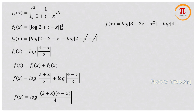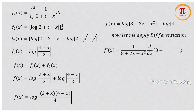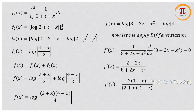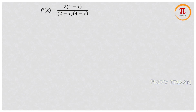Now let me differentiate with respect to x on both sides. Applying differentiation — since the derivative of log x is 1/x — and applying the internal derivative, log 4 is a constant so its derivative is 0. Simplifying, taking 2 as common in the numerator and factorizing the denominator, then cancelling the common minus factor, we get the simplified derivative.